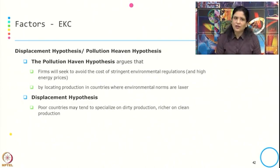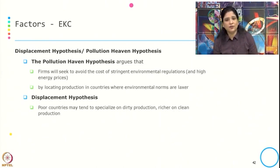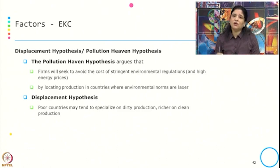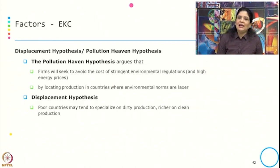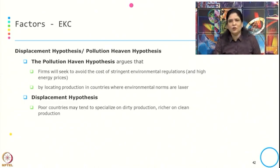Apart from these three effects, there are two other hypotheses responsible for EKC. The first is the pollution haven hypothesis, which argues that due to the cost of stringent environmental regulations and high energy prices, firms locate their production in countries where environmental norms are more relaxed. The net outcome is that more environmental impact comes from developing countries with relaxed environmental norms. The second is the displacement hypothesis, which says that over time poorer and developing countries specialize more in the production of goods and services creating more environmental impact, because this production has been given to the developing countries while rich countries focus on cleaner production.